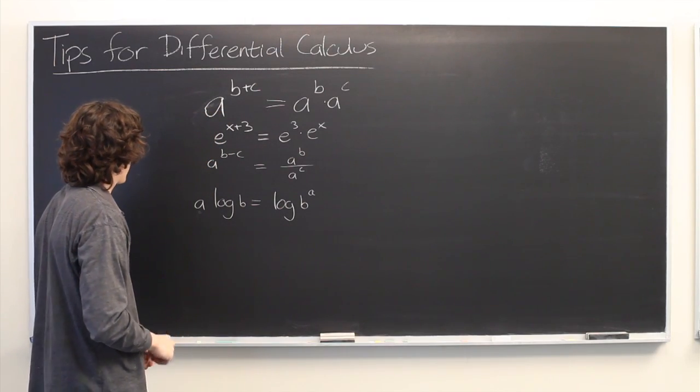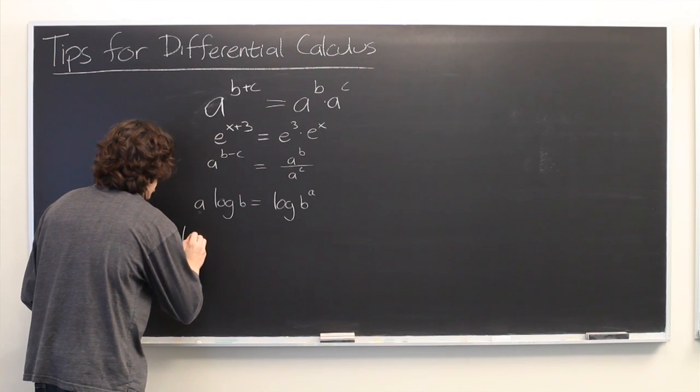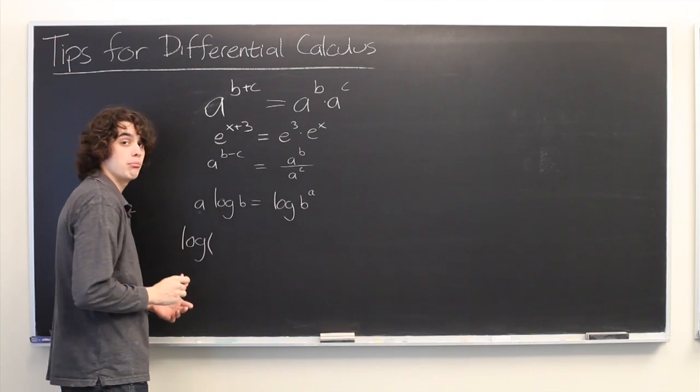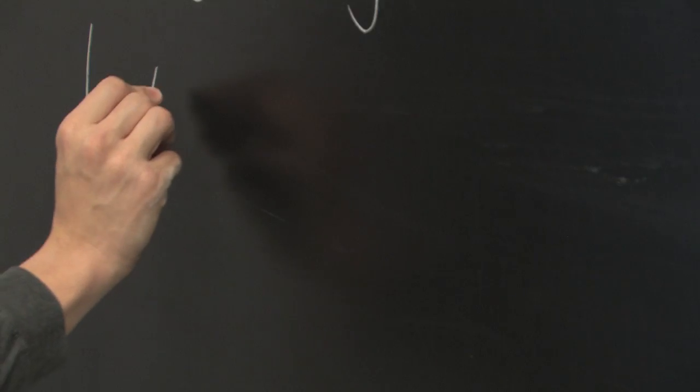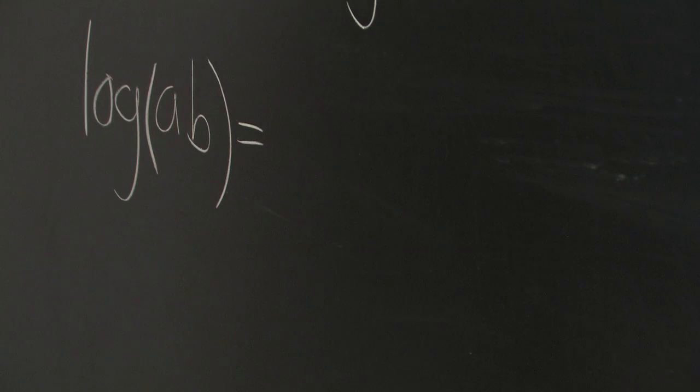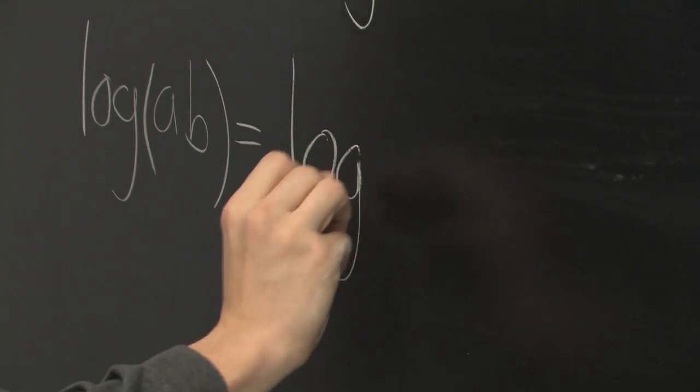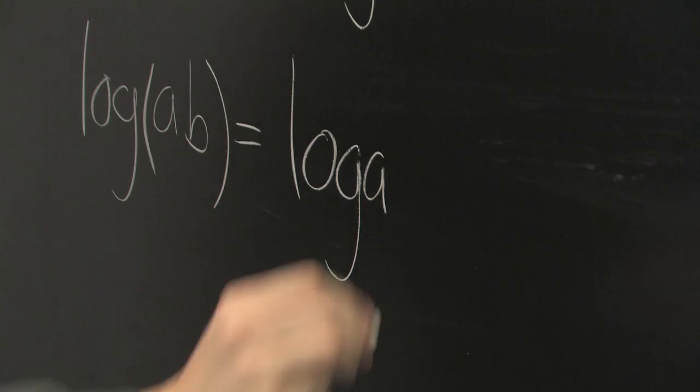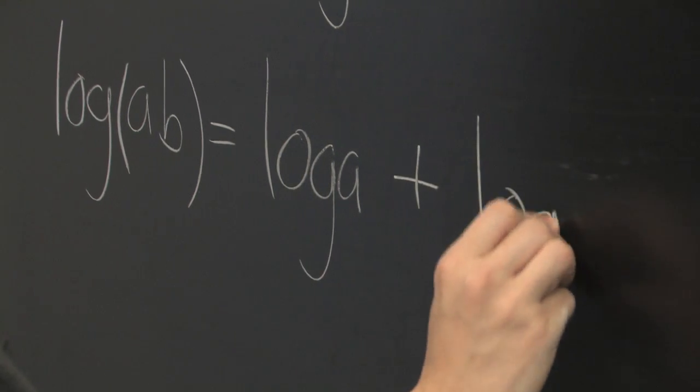Okay, another useful property of logs, one that is frequently misremembered or simply gotten wrong. Let's say you've got log of a times b. Well, this is equivalent to the log of a plus, not times, plus the log of b.